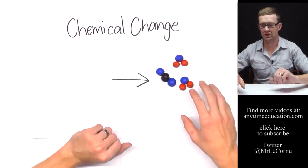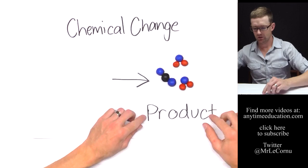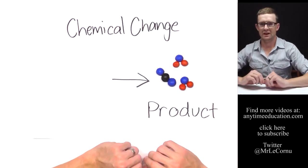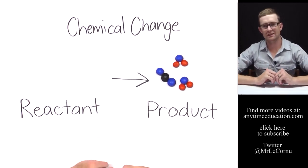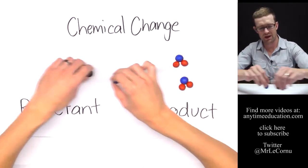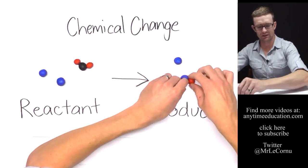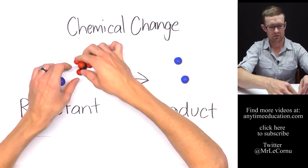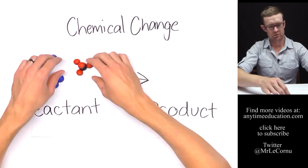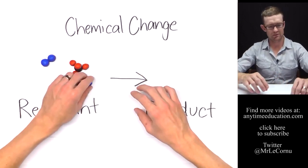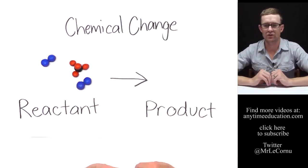Now in a chemical change, we call the new substance that we form the product, and the original substance that we started with the reactant. So if we go back to the beginning again, we started with a reactant that looked like that, and we formed a product that looked totally different.